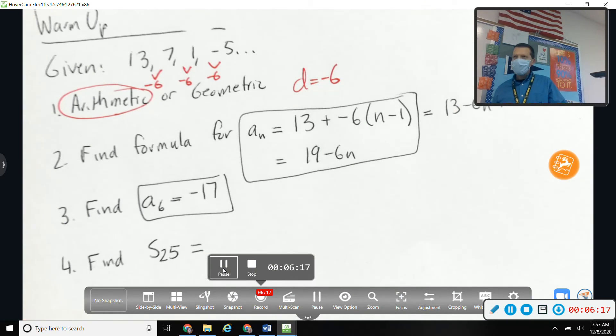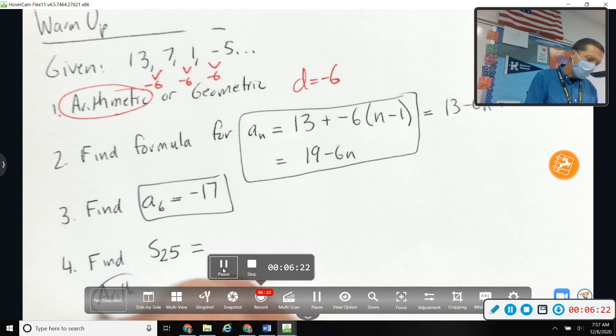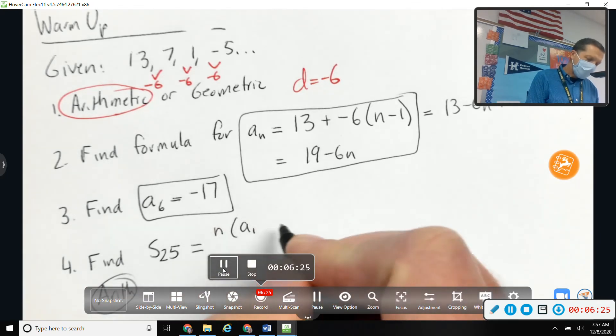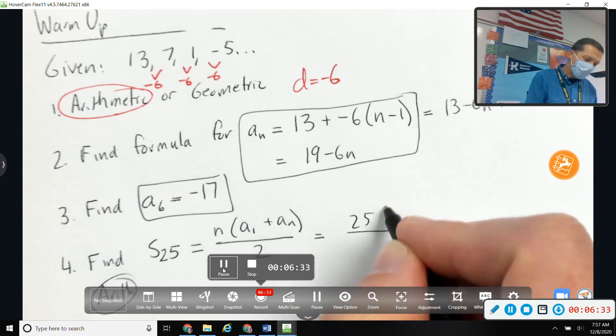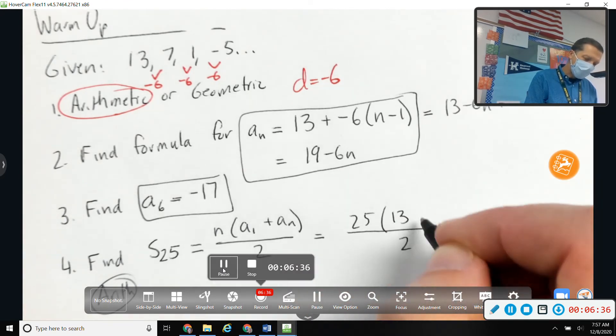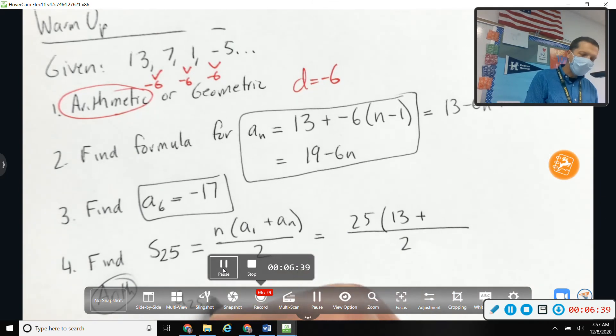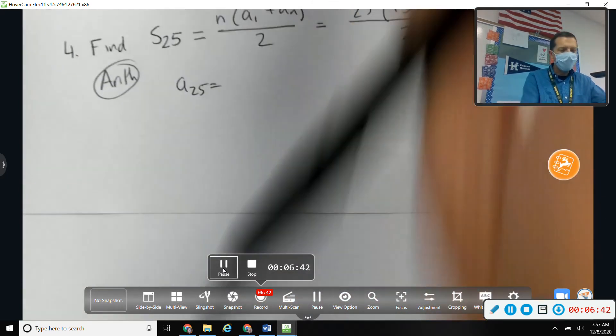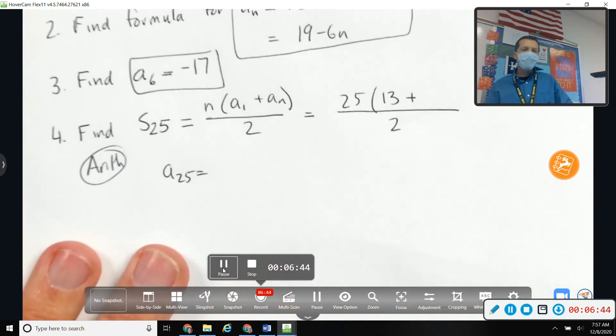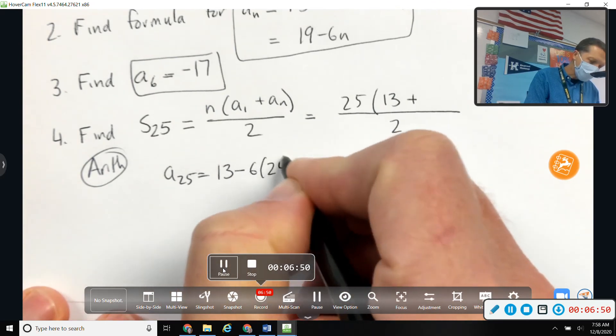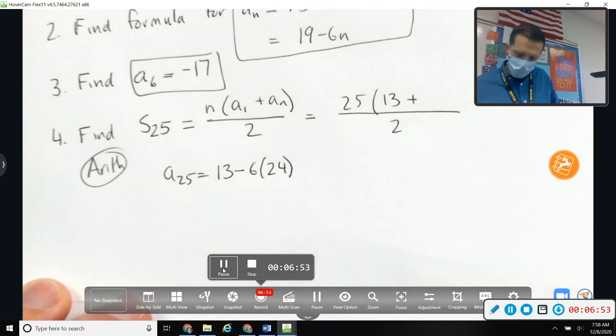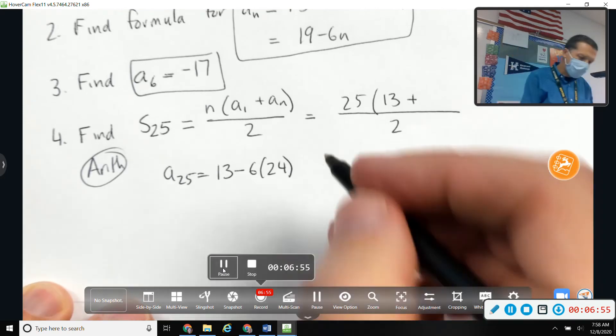Sum formula, be careful, make sure you use the right sum formula. This is arithmetic, so that's n(a₁ + aₙ)/2. So 25 terms, first term is 13. The last term, so this forces me to do an extra problem here. I've got to go figure out what the point is so that I can plug it into my equation. 13 minus 6 times 24 is negative 131.